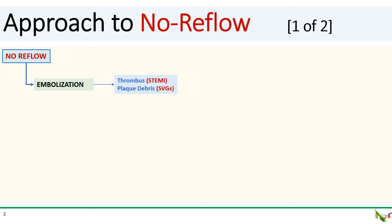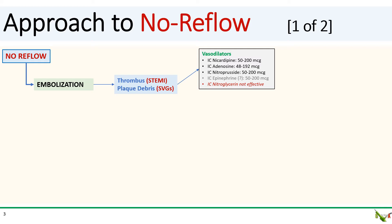A similar phenomenon can happen in PCI of diseased saphenous vein grafts or in atherectomy cases where debris can embolize and clog up the downstream vessels. The mainstay of treatment are vasodilators. And remember that nitroglycerin, which is often used, is actually not very effective at treating no reflow. IC calcium channel blockers are effective.